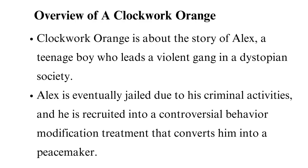A Clockwork Orange is about the story of Alex, a teenage boy who leads a violent gang in a dystopian society. Alex is eventually jailed due to his criminal activities and is recruited into a controversial behavior modification treatment that converts him into a peacemaker. Some key themes the novel examines are free will, transformation, and loyalty.